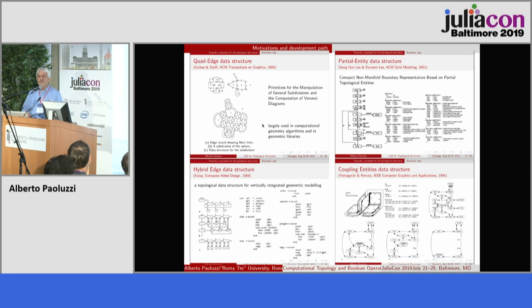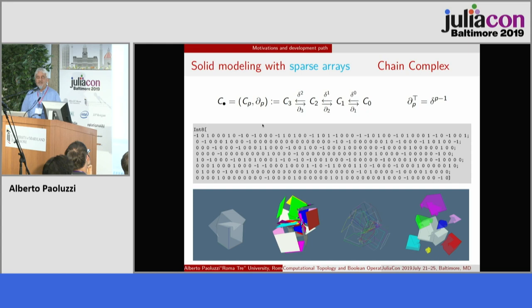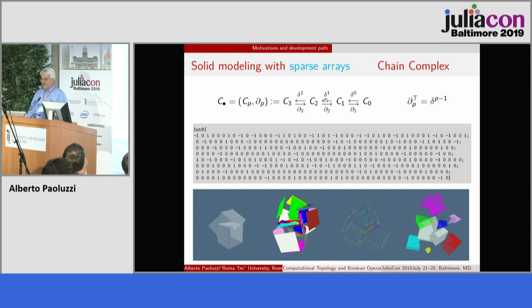For example, in solid modeling you may find very complex data structures, and it's always pretty difficult to make different systems interoperate. Our idea was to do solid modeling and other kinds of geometric computing using only sparse matrices — in particular, binary sparse matrices. The goal is to compute the chain complex induced by the space partition generated by a set of geometric objects. I don't know how many of you have studied some algebraic topology.